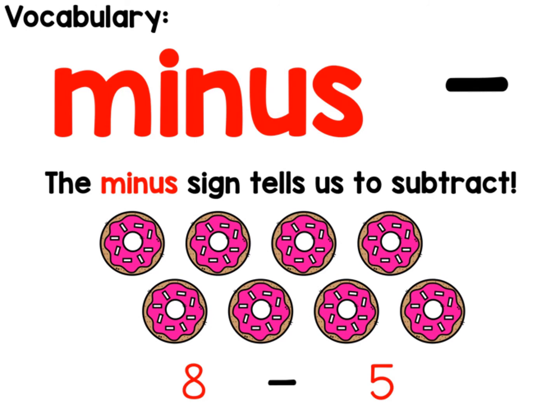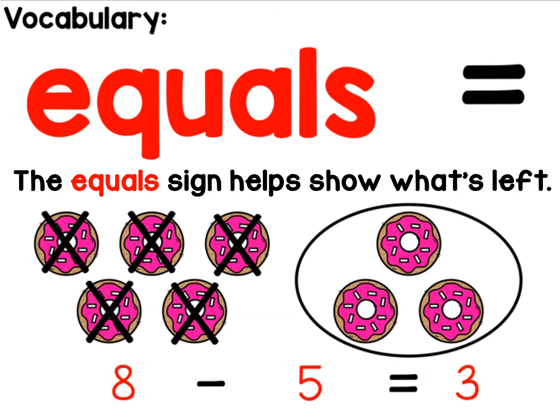Minus. The minus sign tells us to subtract. Eight minus five equals. The equal sign helps show what's left. Eight minus five equals three.